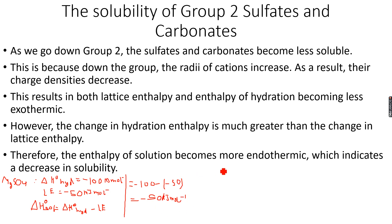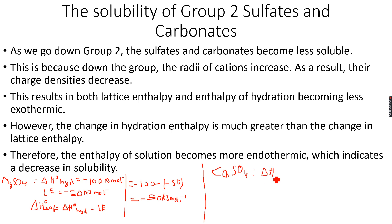These are random values so don't memorize them. Now let's look at CaSO₄, calcium sulfate. In this case, as we go down the group, both the lattice enthalpy and enthalpy of hydration become less exothermic, but the change in hydration enthalpy is much greater than the change in lattice enthalpy. So let's take the change in hydration enthalpy as 50 kJ/mol, making it minus 50 — less exothermic than before.